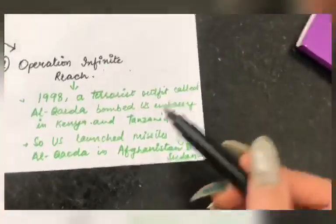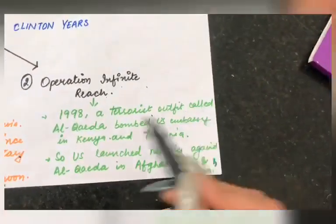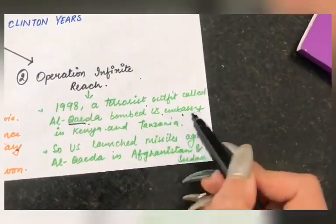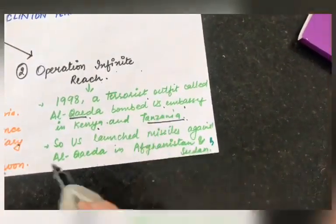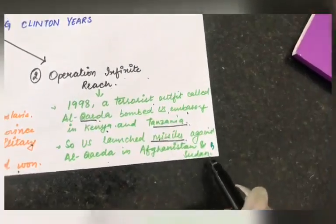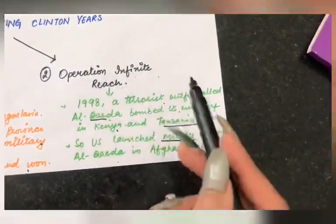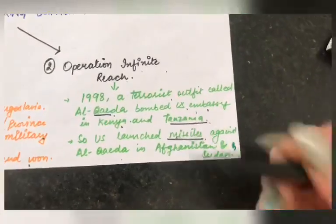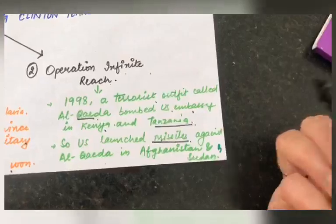The next topic is Operation Infinite Reach. In 1998, a terrorist outfit called Al-Qaeda attacked US embassies in Africa — Kenya and Tanzania. In response, the US launched missiles against Al-Qaeda targets in Afghanistan and Sudan. This was called Operation Infinite Reach. The message was clear: wherever we are attacked, we will respond and retaliate.